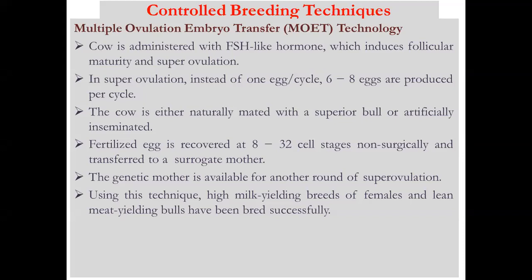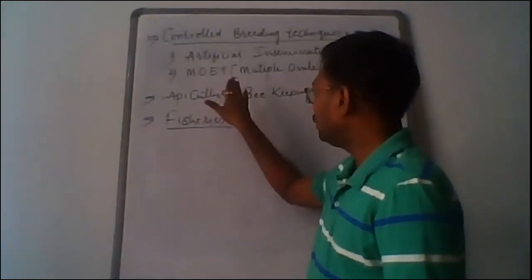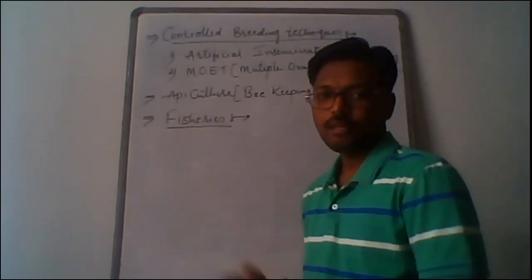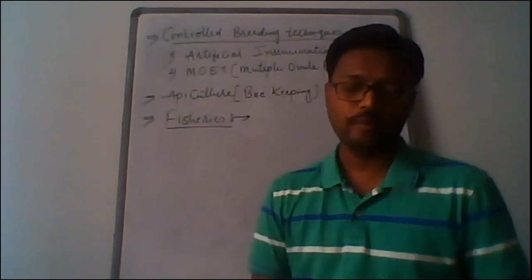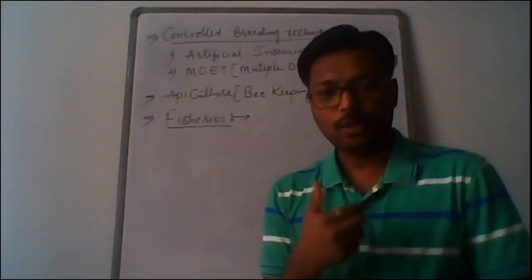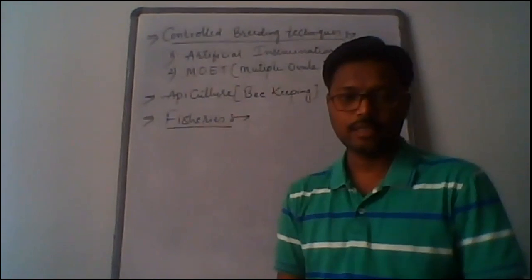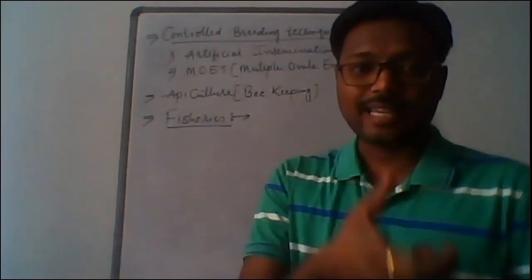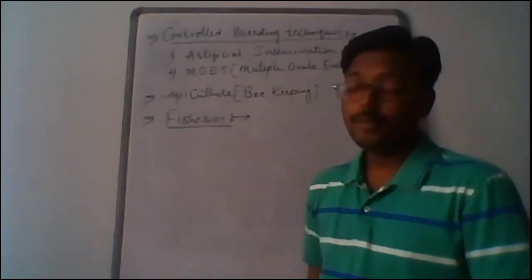By using this technique, high milk-yielding breeds of females and meat-yielding bulls have been bred successfully. This method helps to produce the required high-yielding milk-producing females. The collection of fertilized eggs is done by non-surgical method using the Foley catheter device on the basis of the gravity flow method. This completes the topic of artificial insemination and multiple ovulation and embryo transfer technology.